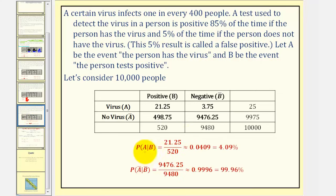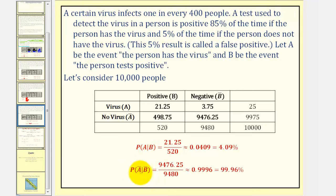The probability of A given B is approximately 0.0409, or about 4.09%. This value should be quite surprising — it means only 4.09% of the people that test positive actually have the virus, so hopefully there's a better test to determine who's infected. The probability of not A given not B, meaning the probability a person doesn't have the disease given they tested negative, is approximately 99.96%, which is good. So this test is pretty good for determining who doesn't have the disease, but it's not very good for determining who does.